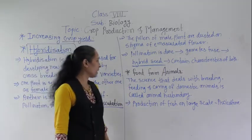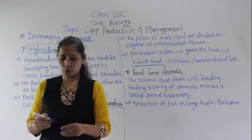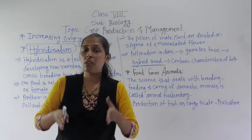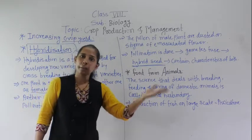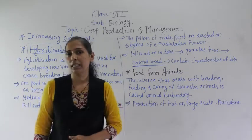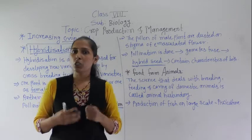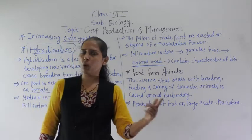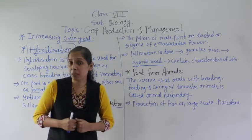Now we will move to the last point from this lesson, which is food from animals. Up till now we have discussed agriculture practices where plants are the ultimate source of food on Earth. But from animals also we get certain food items like chicken, fish, honey, cheese, and butter — and milk from cows, buffaloes, and goats. All these are animal products that we consume.